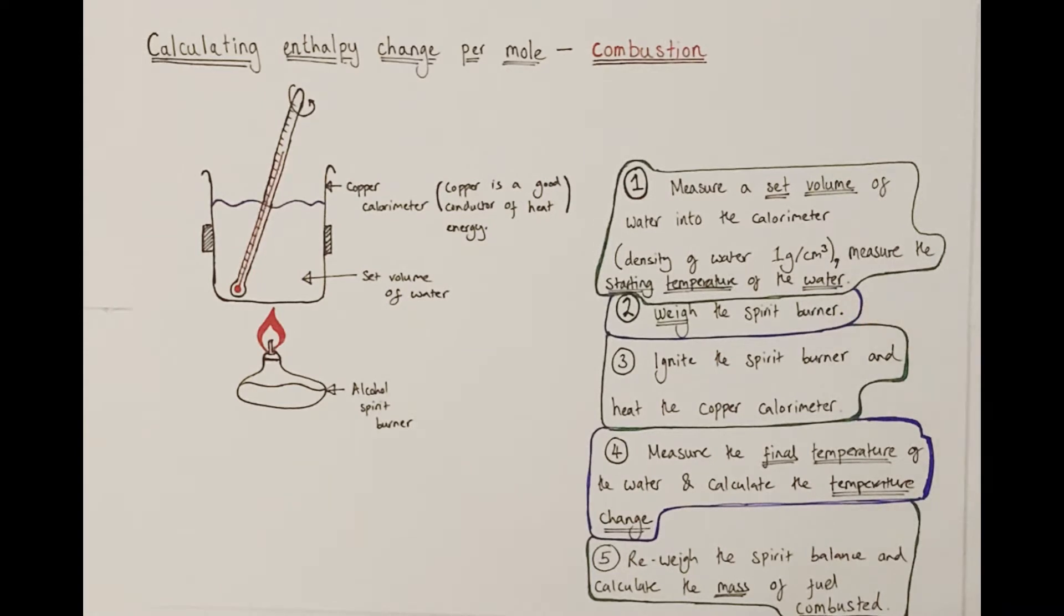We make sure we weighed the spirit burner before we start the experiment. We then ignite the spirit burner with a match or splint and heat the copper calorimeter using the burning fuel. After a certain set amount of time used as a control, we would measure the final temperature of the water and calculate the temperature change of the water across the course of the experiment. We then re-weigh the spirit burner and calculate the mass of fuel combusted due to the change in mass over the course of the experiment.